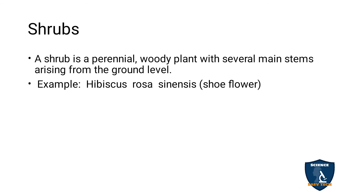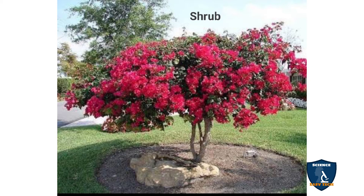Next, shrub. A shrub is a perennial — which grows for many years. It is a woody plant with many main stems at the ground level. Example: Hibiscus rosa-sinensis, the shoe flower. The shrub will grow till about 1.5 metres tall. If it grows to this height, the plant is called a shrub. Example: Hibiscus rosa-sinensis.